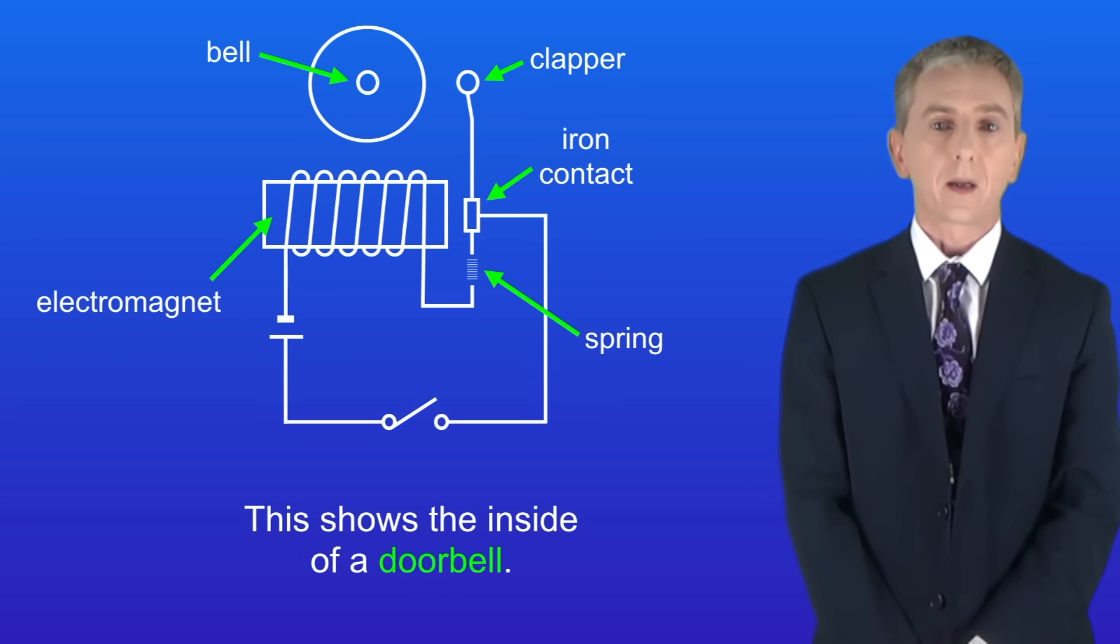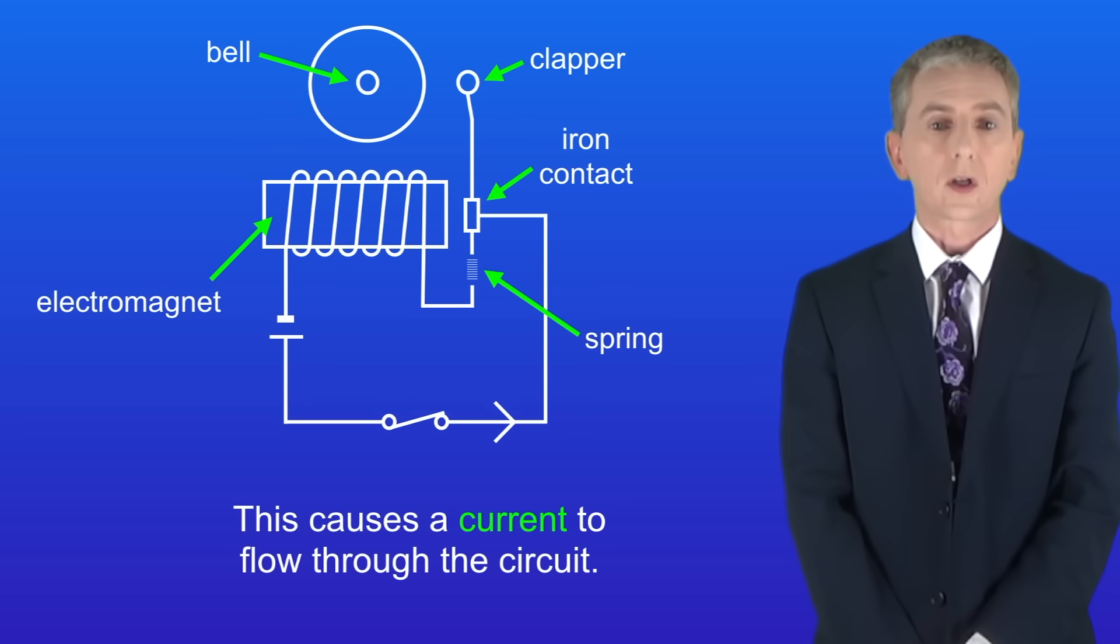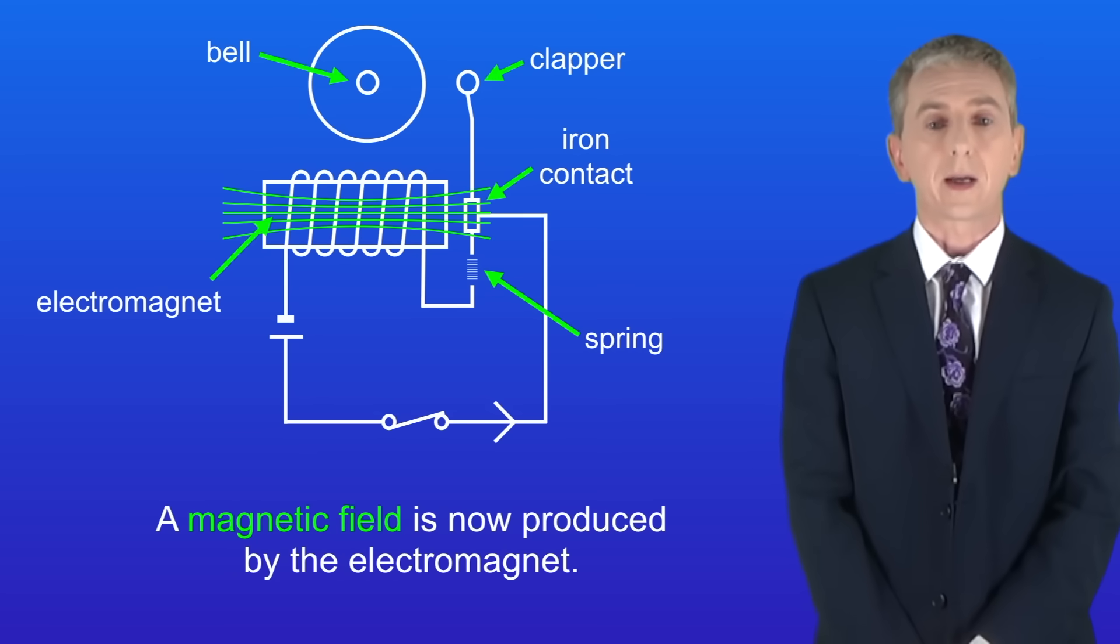This shows the inside of a doorbell. The switch is closed when the buzzer is pressed. This causes a current to flow through the circuit. A magnetic field is now produced by the electromagnet.